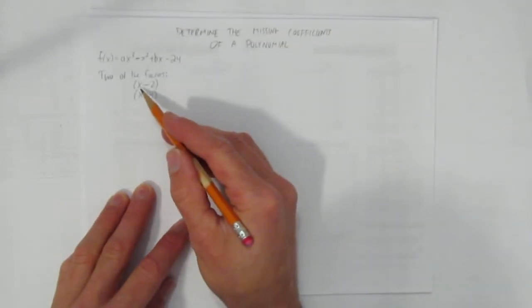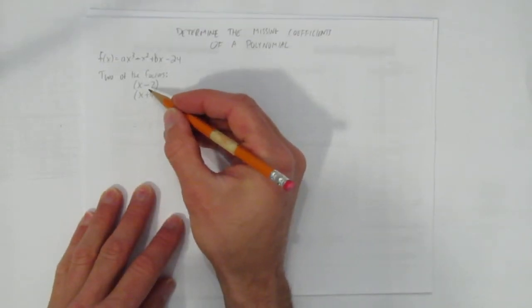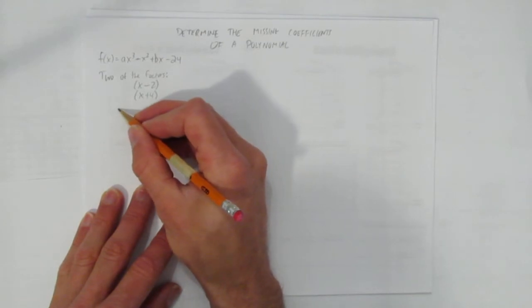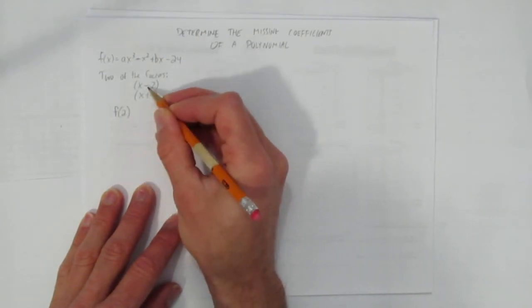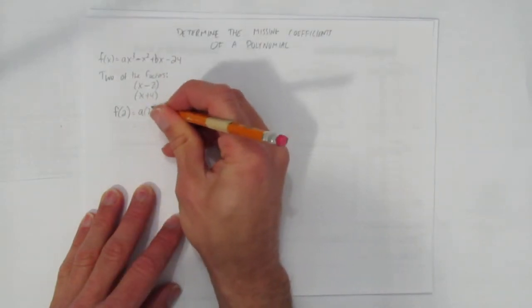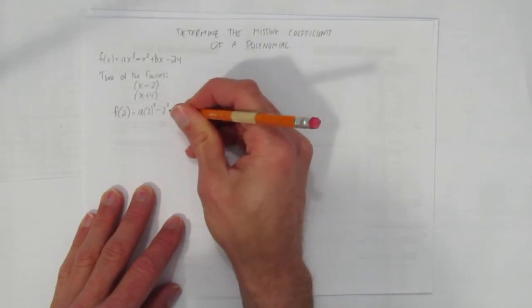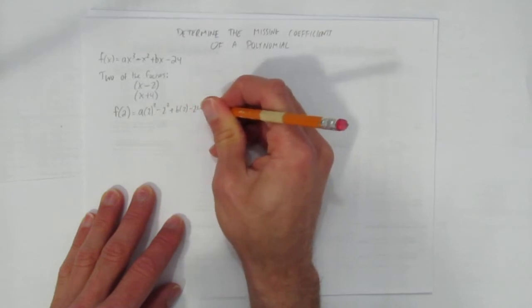So if we know a factor is x minus 2, that means we know its zero is 2, and we can use factor theorem or remainder theorem to sub it in. Let's sub in that zero. f at 2 corresponds to that factor zero, and you get a times 2 cubed minus 2 squared plus b times 2 minus 24.